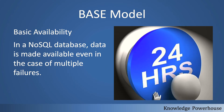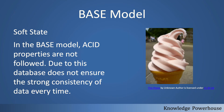The first part of BASE is Basic Availability, meaning that in a NoSQL database, data will be made available even in the case of multiple failures. In a distributed system, it's very probable that some nodes will go down. Even if nodes go down, the database will still be available. This is achieved by replication — storing the same data in multiple locations. If one copy is lost, it can be retrieved from another copy, ensuring the database is not completely down.